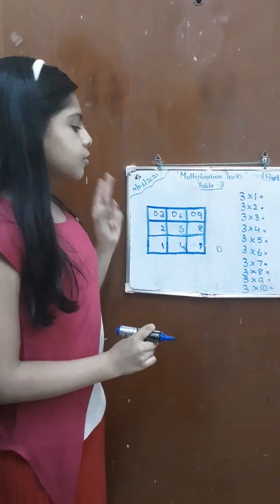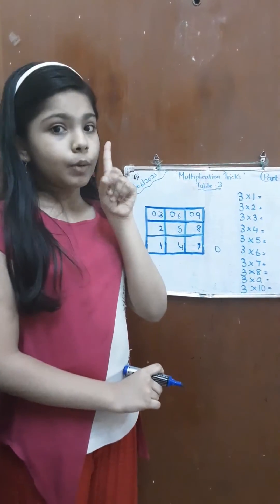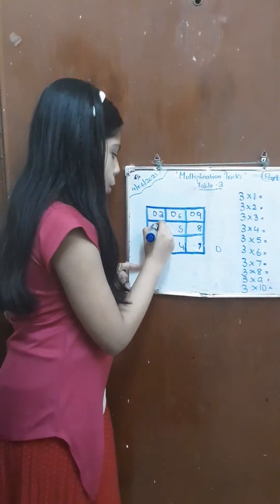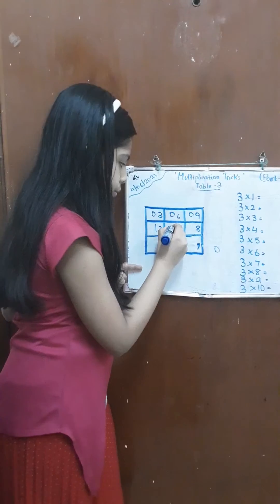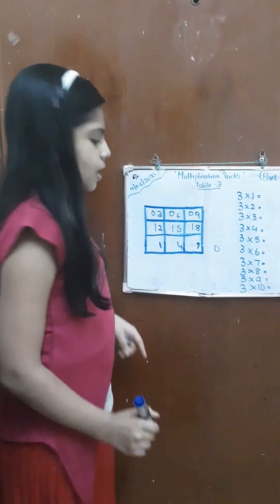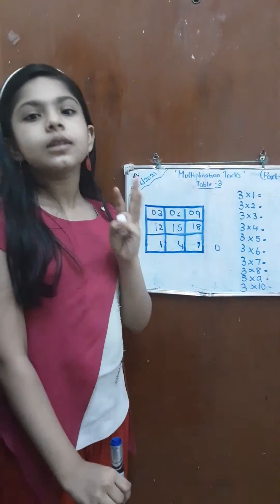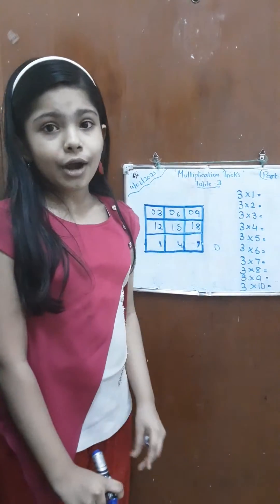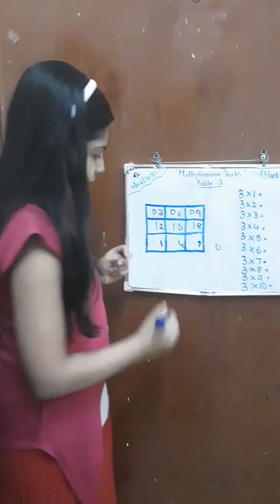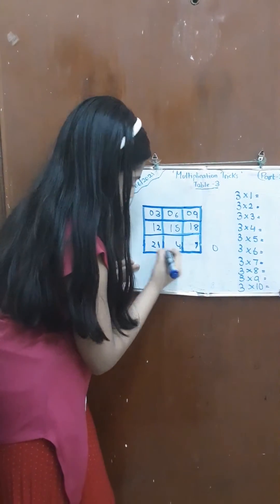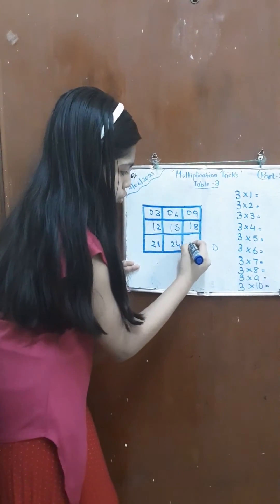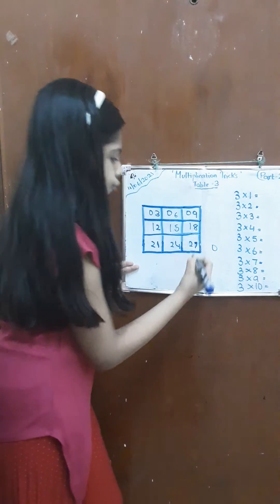Now on the second row we are going to write number 1 as the tens place: 1, 1, 1. Now in the third row we are going to write the number 2 as the tens place: 2, 2, 2.